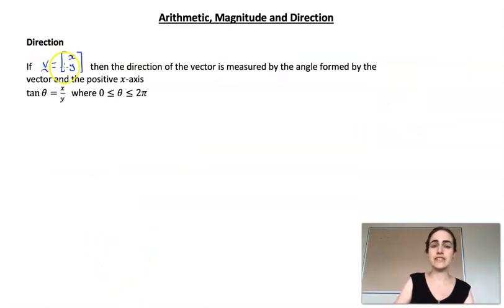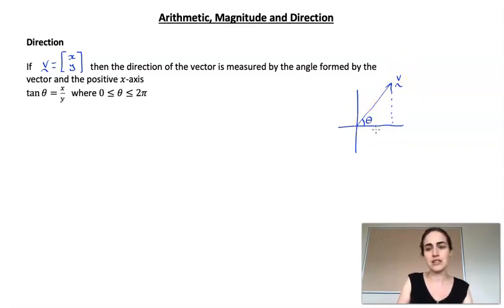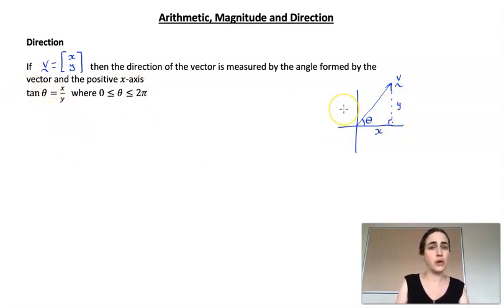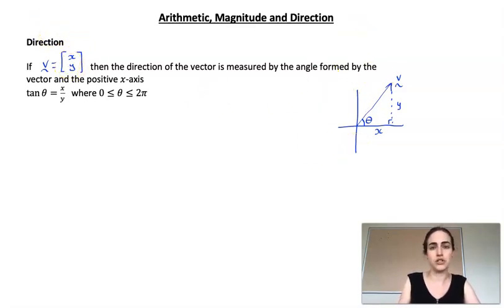Looking at direction: the direction of a vector is defined as the angle between that vector and the positive x-axis. Drawing our x and y axes with a vector coming up, this angle theta is the direction of our vector. Since it has components x and y, we can use right-angled trig: tan theta equals y over x. Note: this gives two answers for theta in two different quadrants — either the first and third, or the second and fourth — so we need the component information to determine which quadrant our vector lies in.